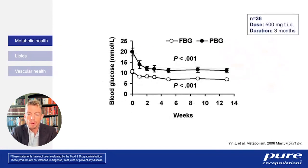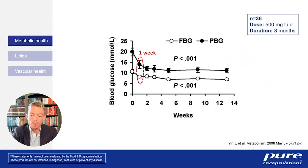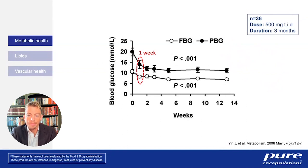The evidence overwhelmingly supports that berberine promotes healthy glucose responses. In one small study of 36 subjects receiving 500 milligrams of berberine three times daily for six months, fasting and postprandial blood glucose were both tracked. The study found that just within one week there was a significant favorable effect on glucose response — the effect can be appreciated within a couple of weeks after supplementation begins.